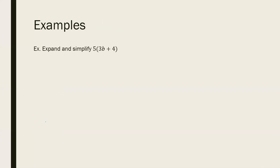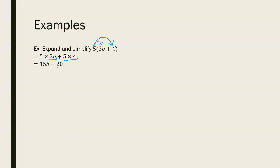So if we have 5 multiplied by (3b plus 4), we take the 5 outside the brackets and multiply by 3b that is inside, and then take the 5 and multiply by the 4. So we have 5 times 3b and 5 times 4. When we do the calculation, 5 times 3b gives us 15b, and 5 times 4 is obviously just 20. So we end up with 15b plus 20.